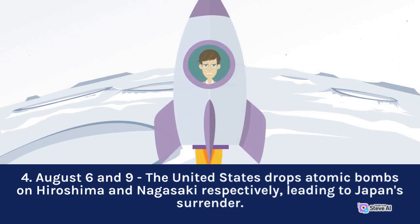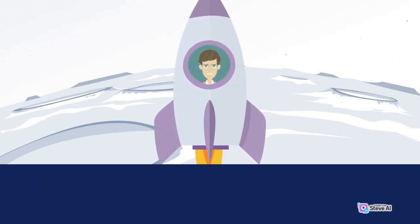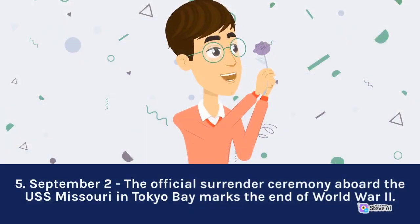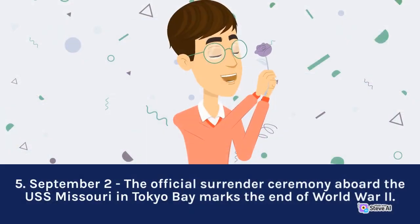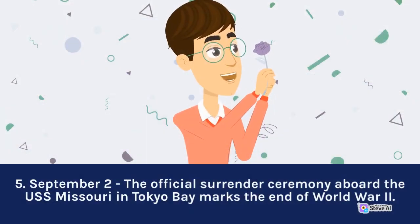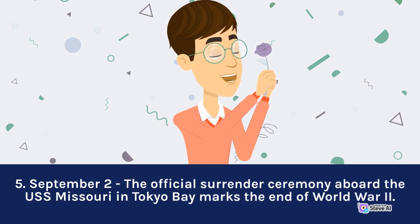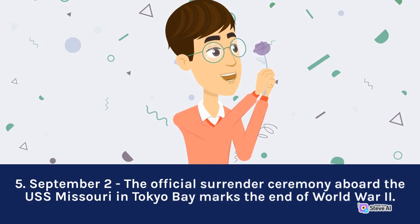August 6 and 9, the United States drops atomic bombs on Hiroshima and Nagasaki respectively, leading to Japan's surrender. September 2, the official surrender ceremony aboard the USS Missouri in Tokyo Bay marks the end of World War II.